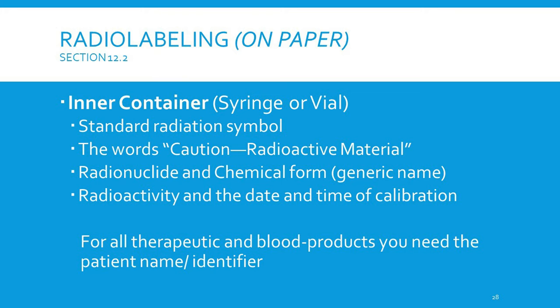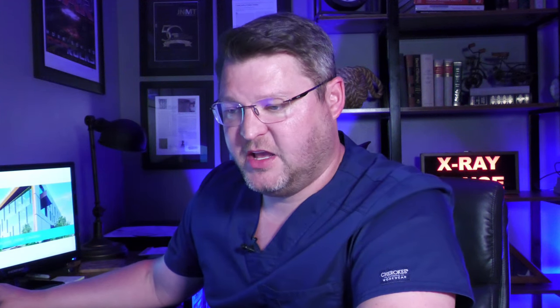Radiolabeling on paper — the inner container (syringe or vial) must show: standard radiation symbols, the words 'Caution' or 'Radioactive Material,' radionuclide and chemical form, generic name, and the date and time of calibration. For all therapeutic and blood products, the patient's name and some form of identifier are also required. The outer container must also be labeled with radiation symbol, 'Caution/Radioactive Material,' radionuclide and chemical form, generic name, date and time of calibration, volume, product expiration, storage instructions, and route of administration.